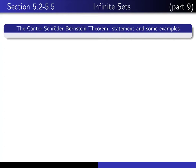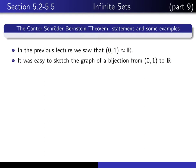This is part 9 in our series of lectures on infinite sets. In this lecture I'm going to introduce you to the Cantor-Schröder-Bernstein theorem. I'm going to state it for you and give you a few examples. In the previous lecture we saw that the open interval (0,1) has exactly the same cardinality as the entire set of real numbers R. It was very easy to see that because we could draw the graph of a certain tangent function that was clearly a bijection from (0,1) to R. We can draw the graph of a similar tangent function, just by translating and dilating it a little bit differently, to show that (0,2) has the same cardinality as R.